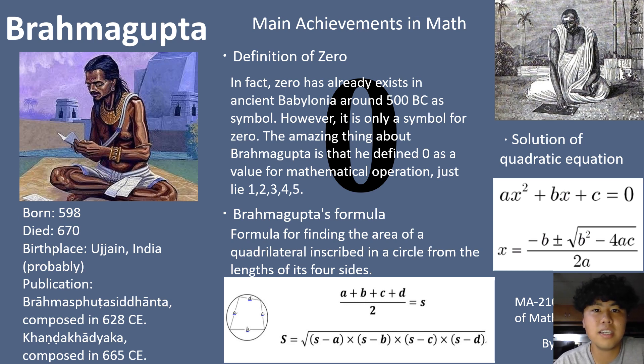He has made a huge impact on the math. Here are a few things of them. The reason why he is a famous historical mathematician is that he defined zero.